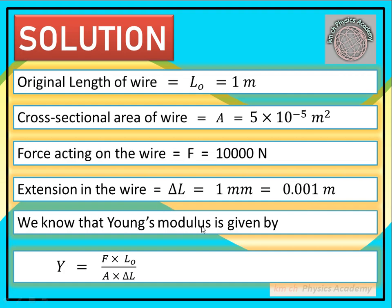Young's modulus معلوم کرنا ہے ہم نے۔ Young's modulus کو capital Y سے represent کرتے ہیں۔ اور یہ برابر ہوتا ہے: Y = (Force × original length) / (cross-sectional area × change in length)۔ تو values لگائیں گے: F = 10,000 newton، L0 = 1 meter، A = 5 × 10⁻⁵ meter square، اور ΔL = 0.001 meter۔